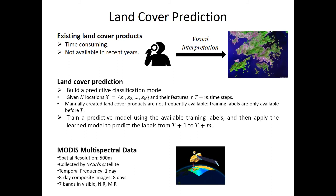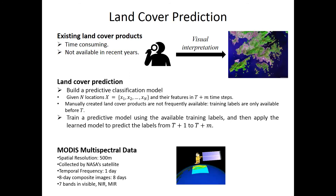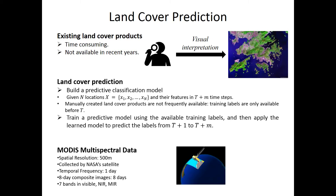To do this, we use MODIS multi-spectral data, which is available at 500-meter spatial resolution and has a temporal resolution of every eight days.